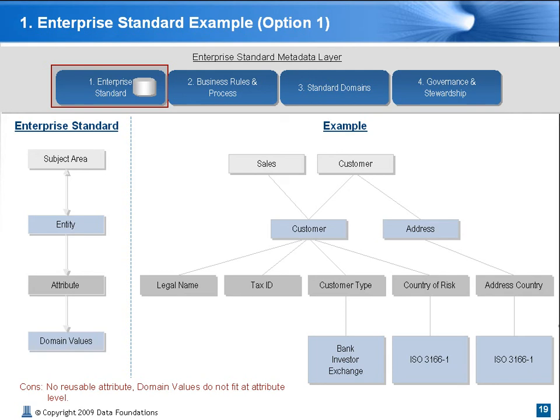Tax ID for customer would be different from tax ID for a vendor. Customer type ID is the attribute, and the values we have are strings. Some of the minor nuances we have seen with this approach — the downside, as in this example, is that there is no reusable attribute, and the domain values do not fit at the attribute level.